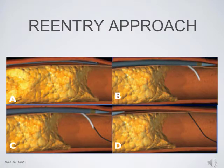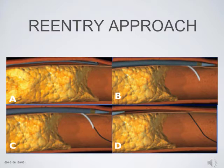This is the reentry device for a PIER approach. The wire goes around the vessel itself into the medial or subadventitial area. The catheter is then inserted over the wire beyond the opening, beyond the distal cap, and the needle is punctured into the lumen. You can see the wire traversing through the needle into the open vessel, and then that is maintained distally while the catheter is removed.